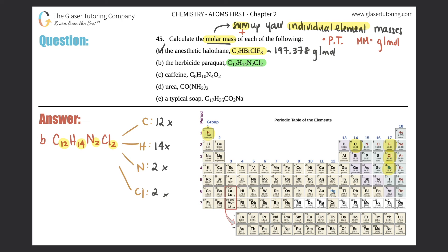Now multiply by the atomic masses. Carbon is 12.01, so 12 × 12.01 = 144.12. Hydrogen is 1.008, so 14 × 1.008 = 14.112. Nitrogen is 14.01, so 2 × 14.01 = 28.02. Chlorine is 35.45, so 2 × 35.45 = 70.90.